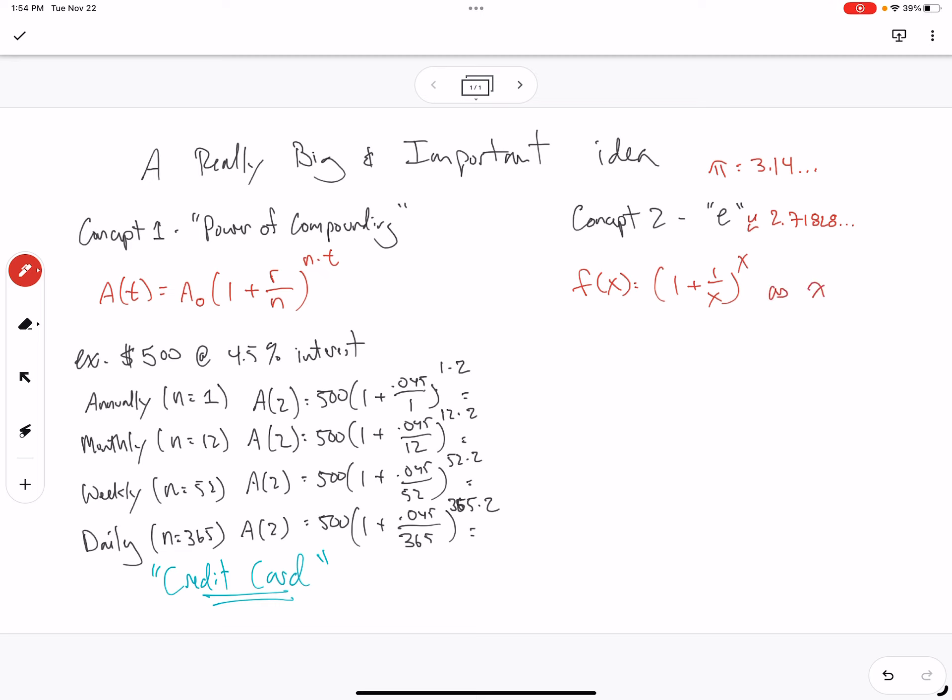As x approaches infinity, right, and this was when we put in bigger numbers for x, as x approaches infinity, what happens is 1 plus 1 over x to the x approaches the number E. In other words, it gets closer and closer to 2.71828 and so on as you go on and on.